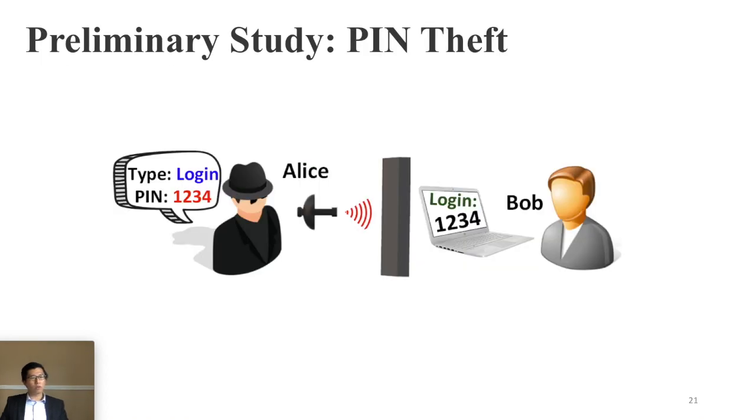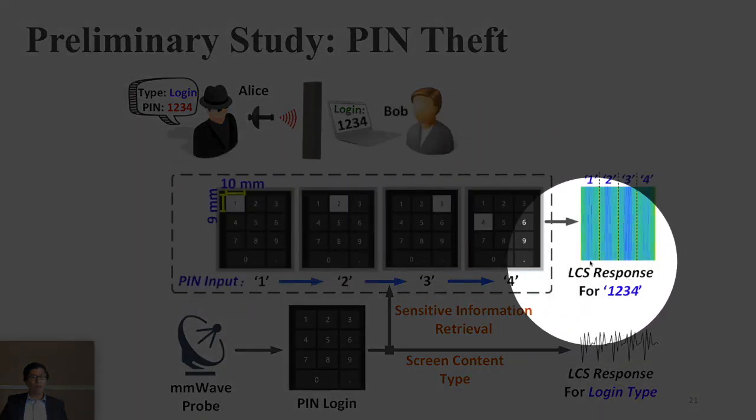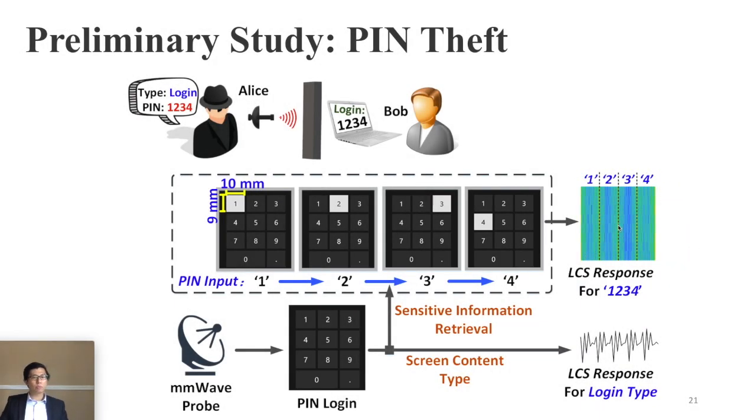Besides this, we also want to know if this new side channel can work in our attack scenario previously mentioned. So here we test with on-screen keyboard. One thing is here, each button plays the same role. So for simple illustration, we just select the password as 1235. The results are shown in this spectrum image, and we observe that the response of each button type is quite different. So by now we have proved our hypothesis.